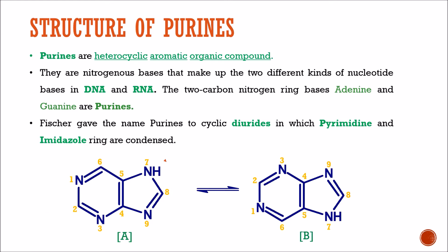Now let us first understand what are purines. Purines are heterocyclic aromatic organic compounds. They are nitrogenous bases that make up the two different kinds of nucleotide bases in DNA and RNA. The two carbon-nitrogen ring bases, adenine and guanine, are purines. Adenine and guanine are derivatives of purine, while purine is the basic moiety.